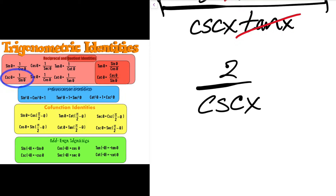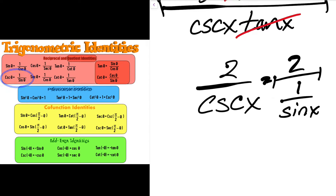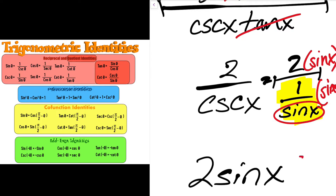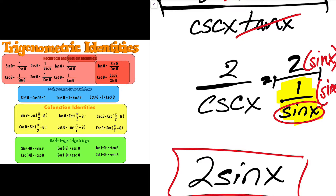Cosecant — if I look at my identities — cosecant is the reciprocal of 1 over sine. So this is 2 divided by 1 over sine x. I want to get rid of that denominator, so I multiply by the reciprocal, which is sine x — multiply both sides by sine x. That gives me a final solution of 2 times sine x. That's pretty much as much as I can simplify that problem, and I'm going to leave it at that.